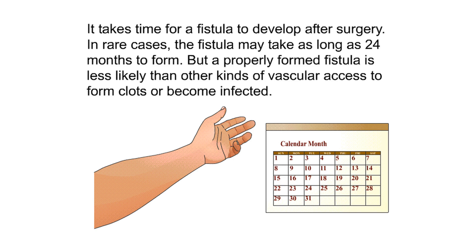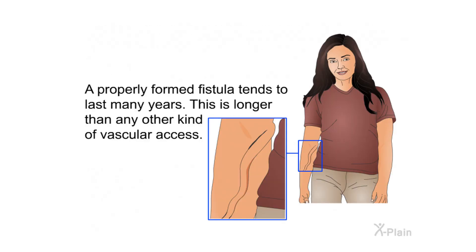It takes time for a fistula to develop after surgery. In rare cases, the fistula may take as long as 24 months to form. However, a properly formed fistula is less likely than other kinds of vascular access to form clots or become infected, and it tends to last many years — longer than any other kind of vascular access.